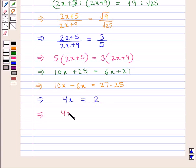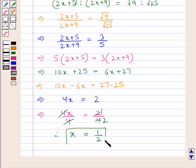To find the value of x, we divide both sides by 4. 4 cancels with 4, and 2 divided by 4 is 1/2. So we get the value of x as 1/2.